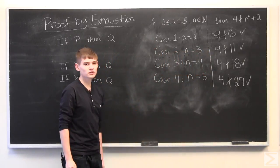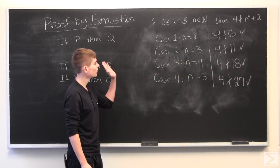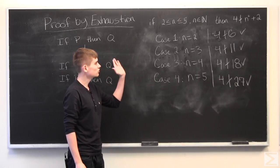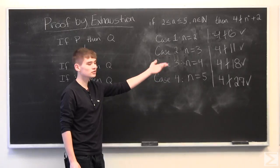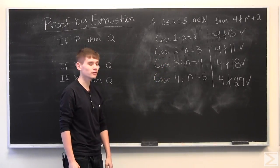So we've broken up into every possible case. We've shown that if N is equal to 2 through 5, N squared plus 2 will never be divisible by 4.